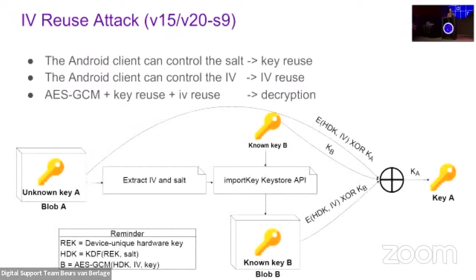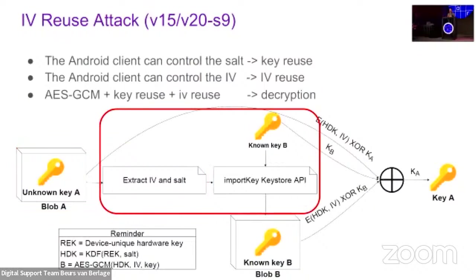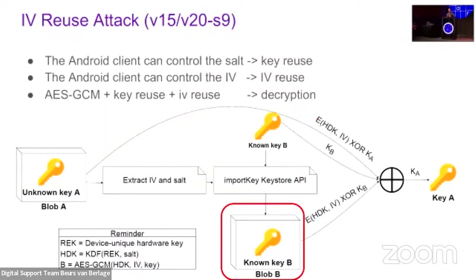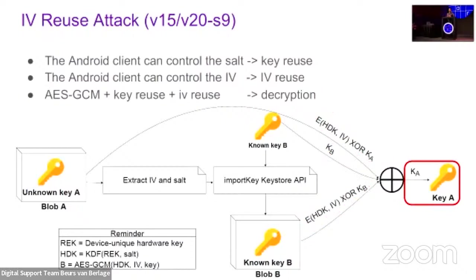Given a key blob A that we wish to recover, we can extract the IV. Using the same IV and salt, we can import a known key B into the KeyStore with the KeyStore API, and we get an encrypted key blob B. Now we can XOR the ciphertext of A with the ciphertext of B to get the XOR of the plaintext, and we can XOR with the known plaintext of B to fully recover key A.